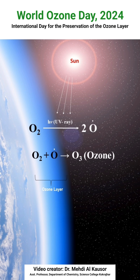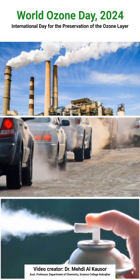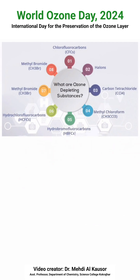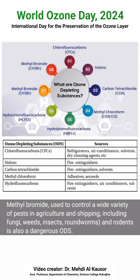One may ask why ozone gas exists in the stratosphere only. The Earth has set up this in a very systematic way — for the formation of ozone gas, we need favorable conditions of temperature and pressure which are available in the stratosphere only. But unfortunately, due to industrial revolution, increase in number of automobiles, and various other man-made activities, this ozone layer is gradually getting depleted day by day.